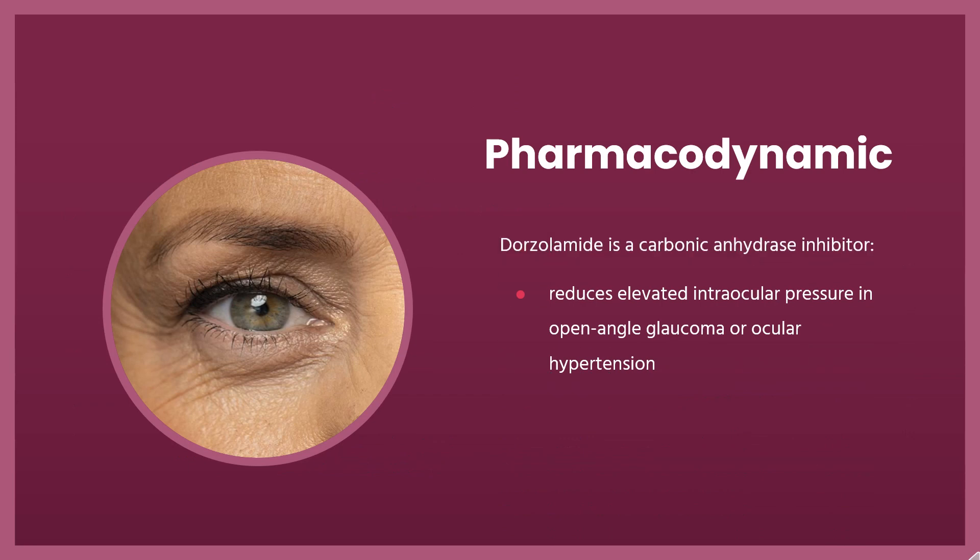Pharmacodynamics. Dorzolamide is a carbonic anhydrase inhibitor that reduces elevated intraocular pressure in open-angle glaucoma or ocular hypertension. When used in combination with topical beta-adrenergic antagonists, dorzolamide has an additive effect of lowering intraocular pressure. The peak ocular hypotensive effect of dorzolamide is observed at about 2 hours following ophthalmic administration.